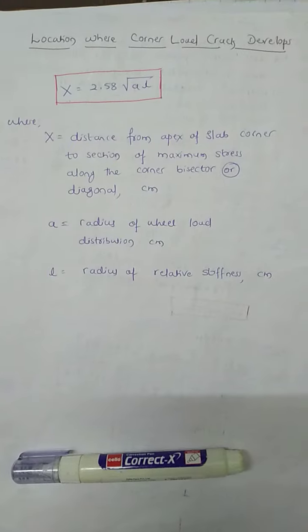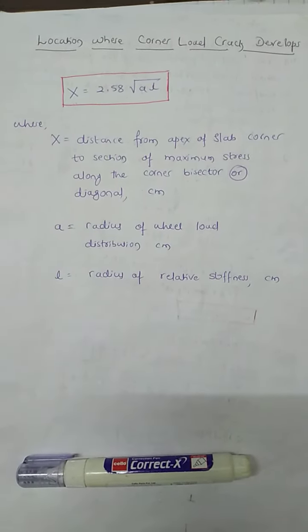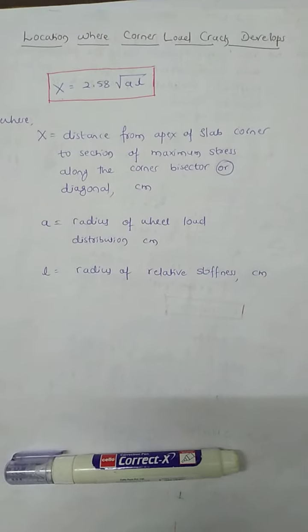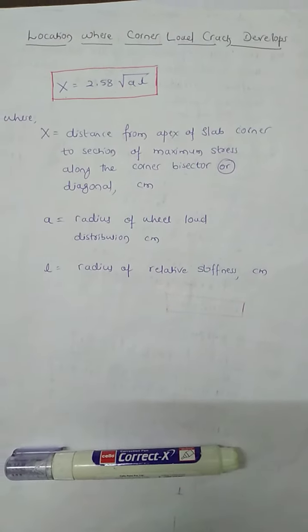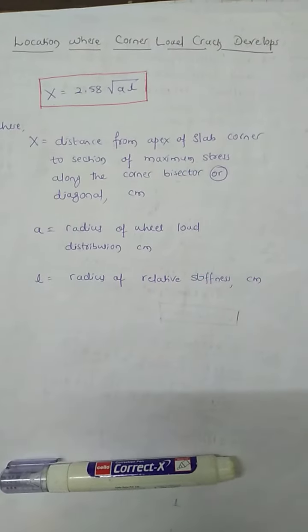Maximum stress produced by a wheel load at corner does not exist around the load, but it occurs at some distance x along the diagonal.